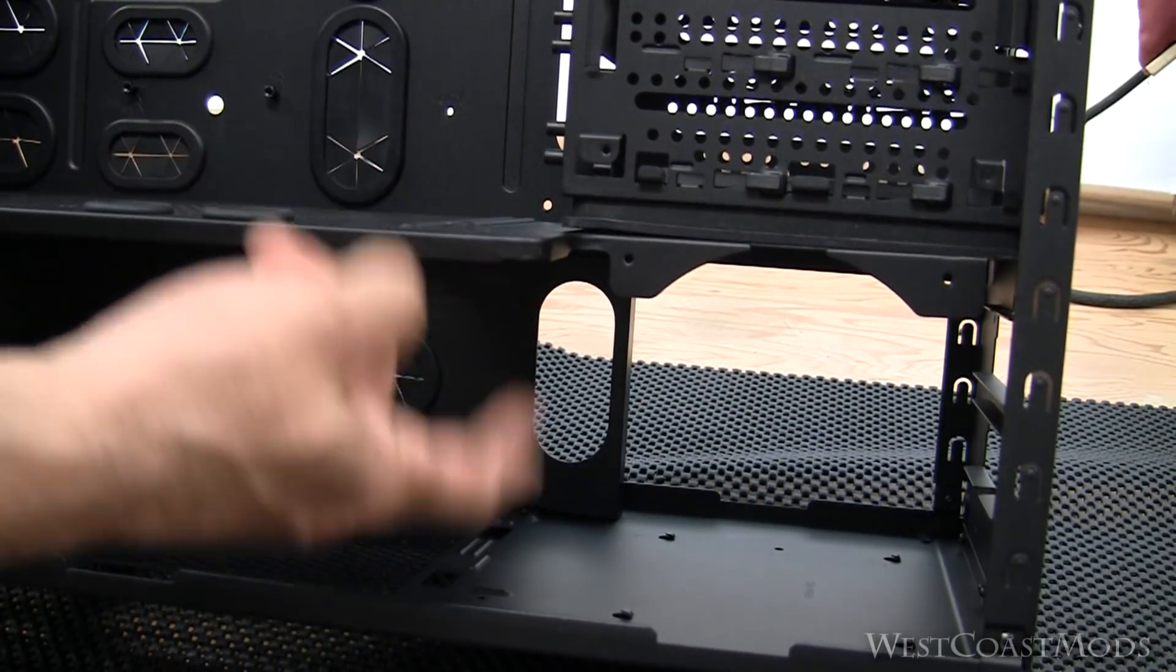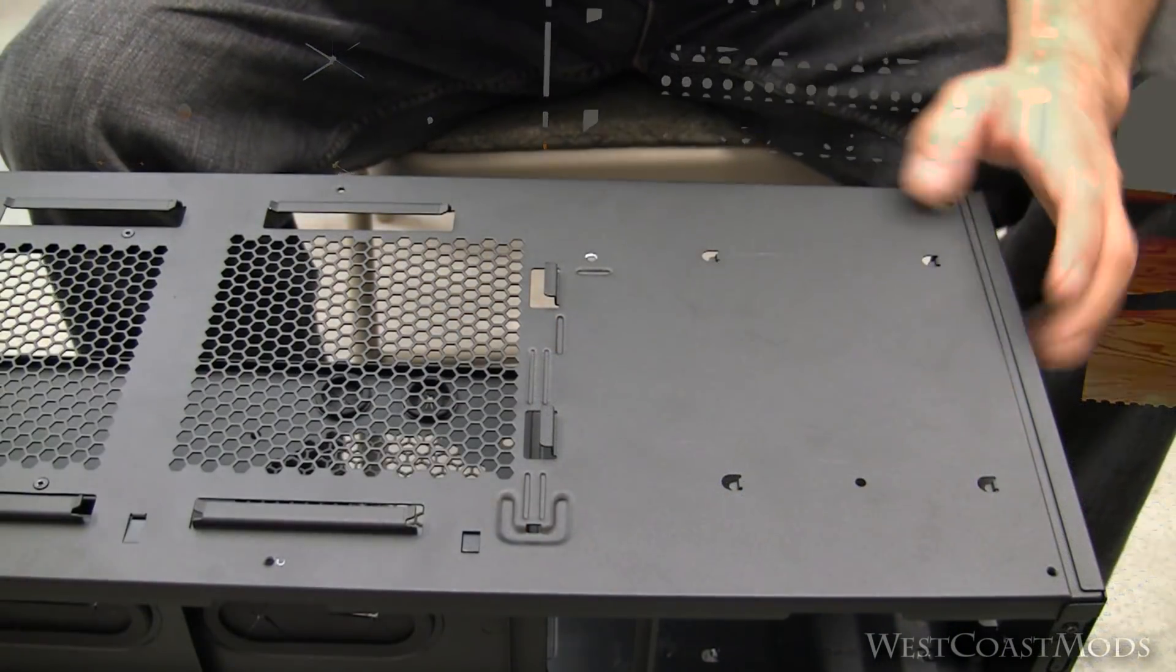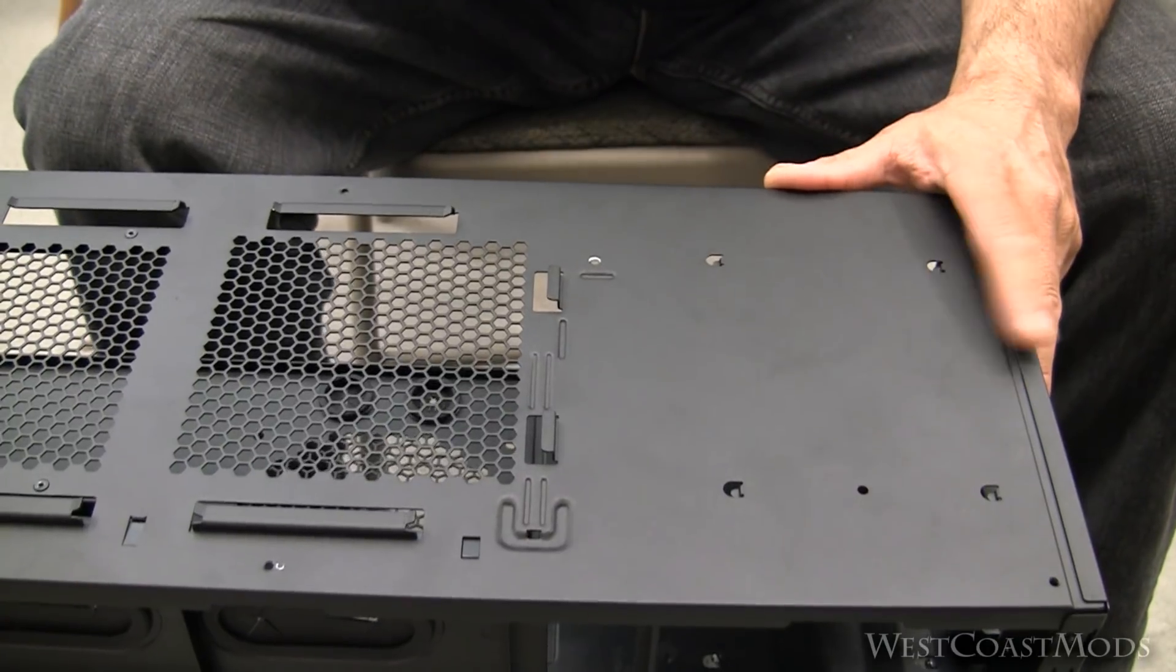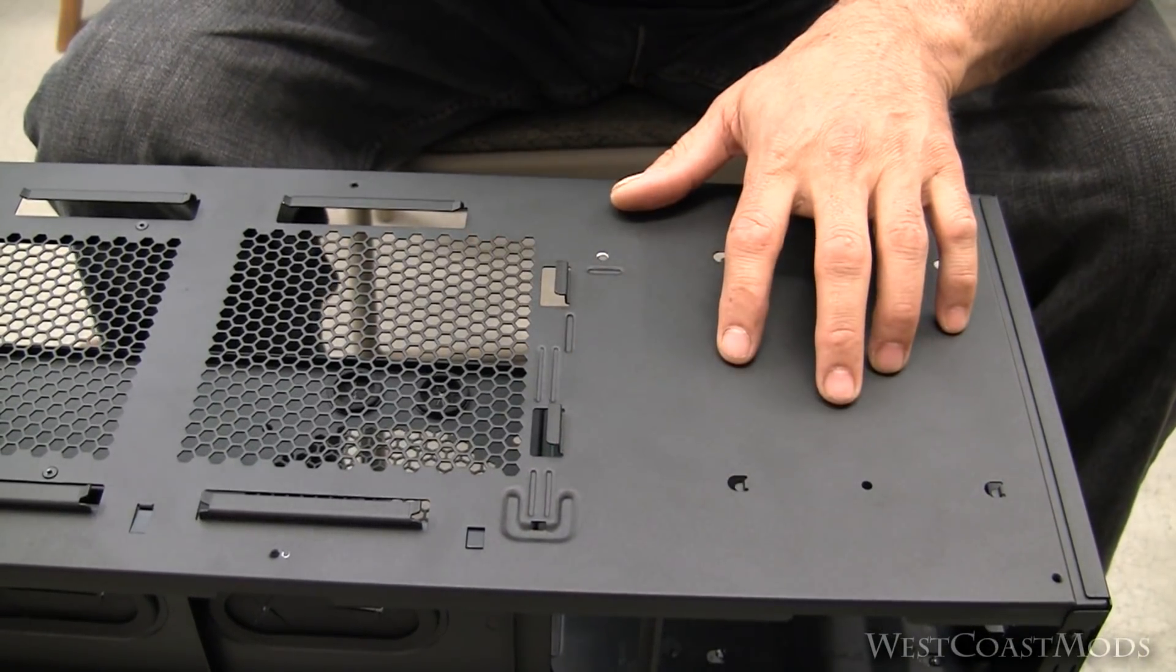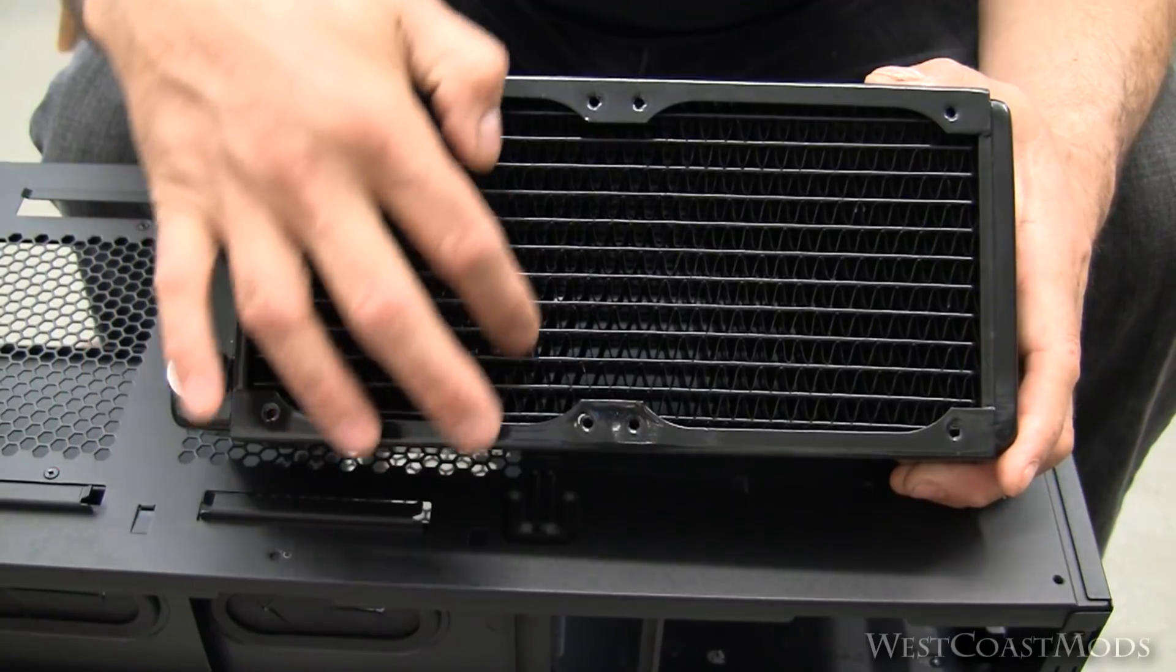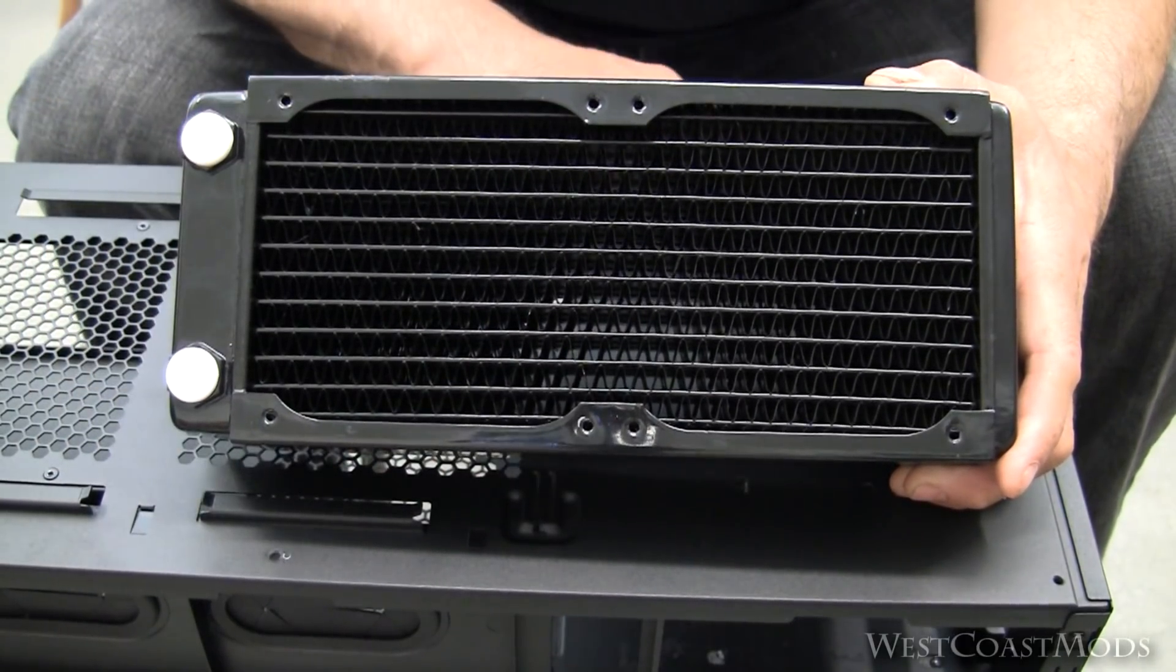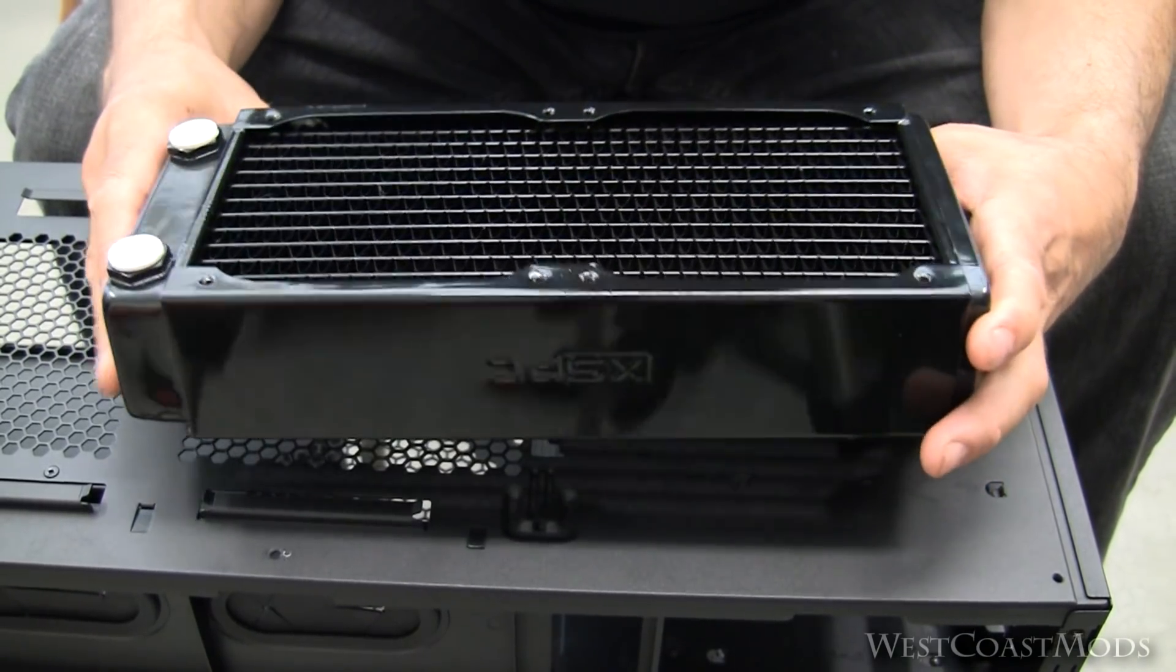I do have the case upside down and it is sitting on the ground so you guys can see what we're doing here. What we need to do now is lay out where we're going to make our cutout, and what we want to do is transfer the outside perimeter of the rad along with the screw holes to the bottom of the case.